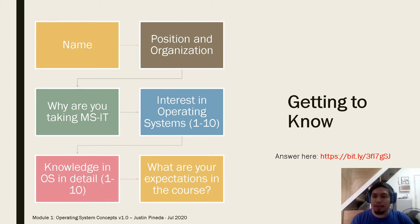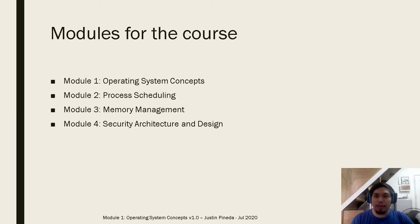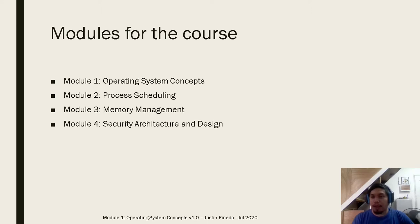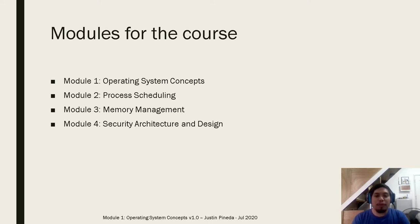We'll have a discussion in a synchronous session next time. For this course, we'll be having four modules for the month. We start with Module 1, Operating System Concepts. For the graduate school course, we'll be dealing more on the features and improving the features of current operating systems, analyzing limitations, and optimizing operating systems. For Modules 2 and 3, we'll do simulations in operating systems such as process scheduling and memory management. And for Module 4, we'll be discussing security architecture and design.